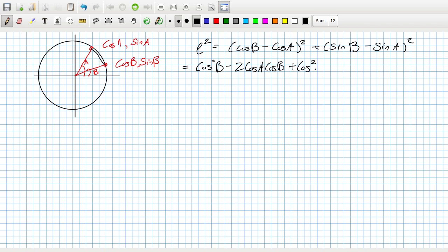But cos squared and sin squared is 1, and cos squared and sin squared is 1. So that's 2 minus 2 cos A cos B minus 2 sin A sin B.